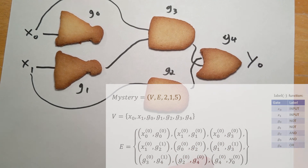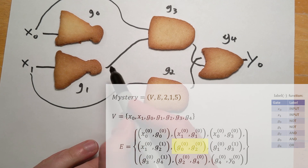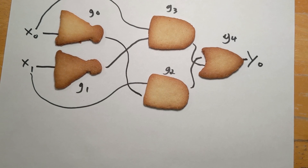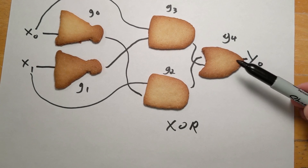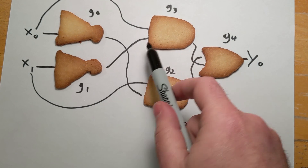Then g4 goes to y0. Now this is our circuit. Hopefully you can see from this circuit that this is actually the XOR function — the result is the OR of the two ANDs, where the ANDs compute x0 AND NOT x1, or x1 AND NOT x0.